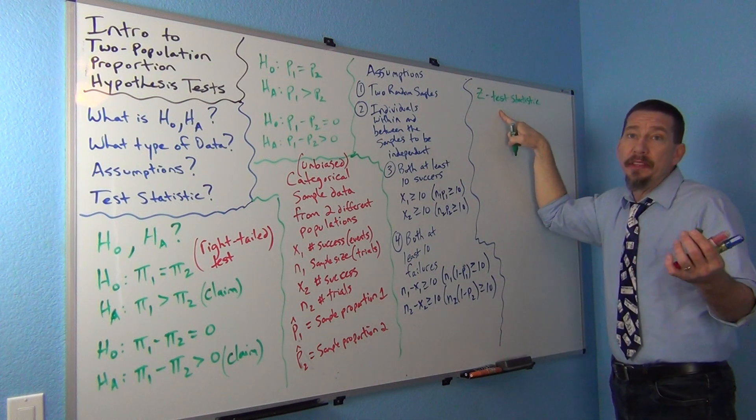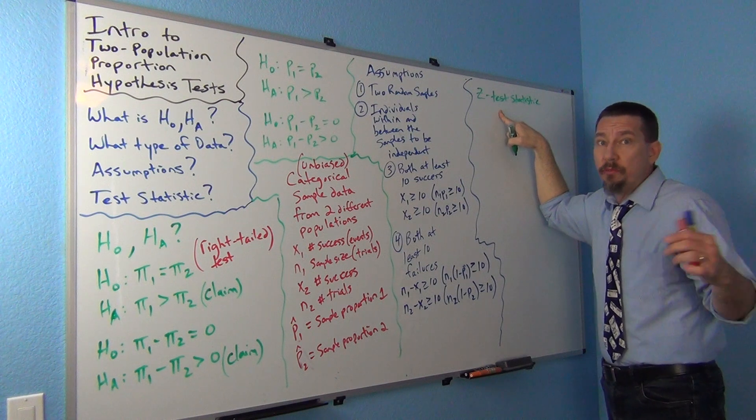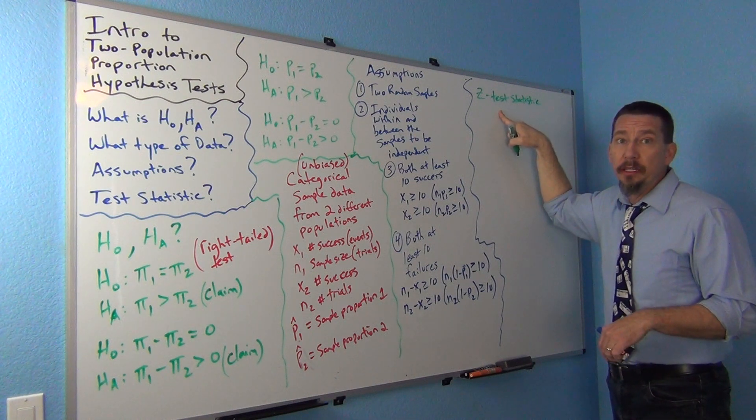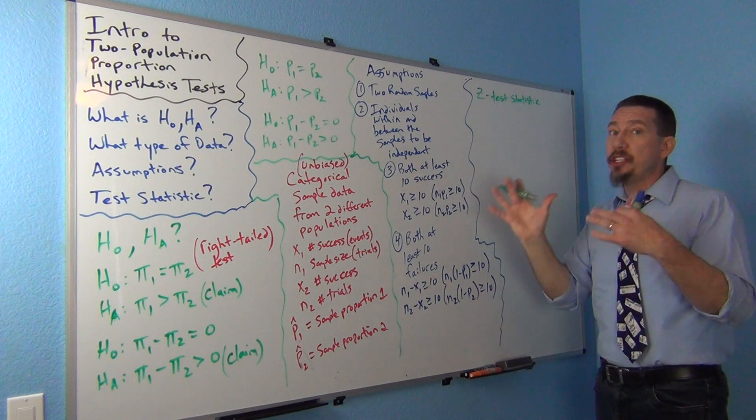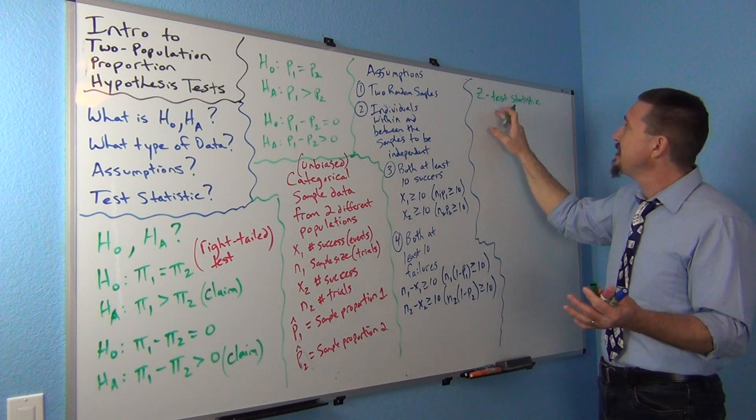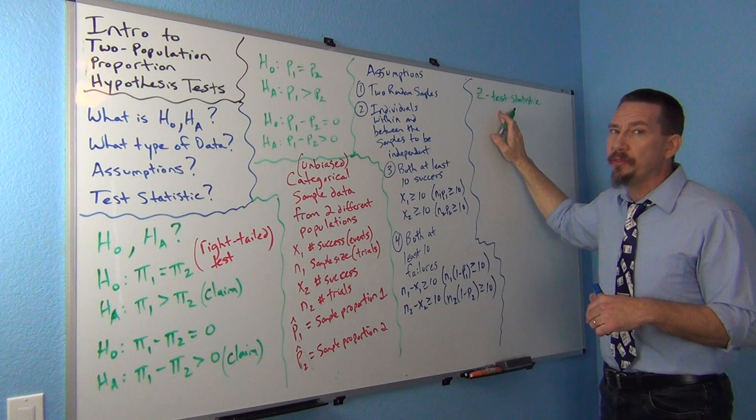All right, so let's look at our Z test statistic, see what we got there. So, we're going to use the Z test statistic. That means when I'm looking at critical values, I'll be using the standard normal distribution, one that we've covered over and over again.